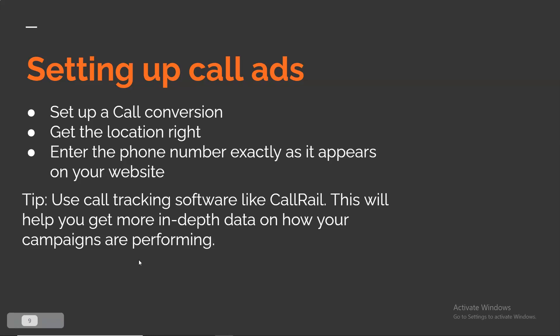For setting up call ads, you need to set up a call conversion inside Google Ads — Google has a tutorial on this, and leave a comment if you need help. Target the locations you're servicing and don't target irrelevant locations. Enter your phone number exactly as it appears on your website so Google can verify you're the owner. Use a call tracking software — CallRail is a great option because it provides much more in-depth data on how your campaigns are performing.